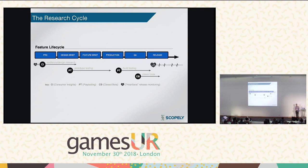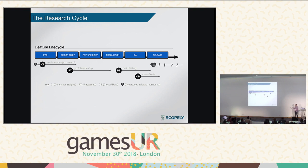Once we identify issues we want to tackle, it comes back to us as researchers. We can explore the problem space, make sure we fully understand what's going on, work with teams to come up with ideal solutions, and then make sure those solutions are usable. Ideally this is an infinite cycle of iteration making our games better and better.